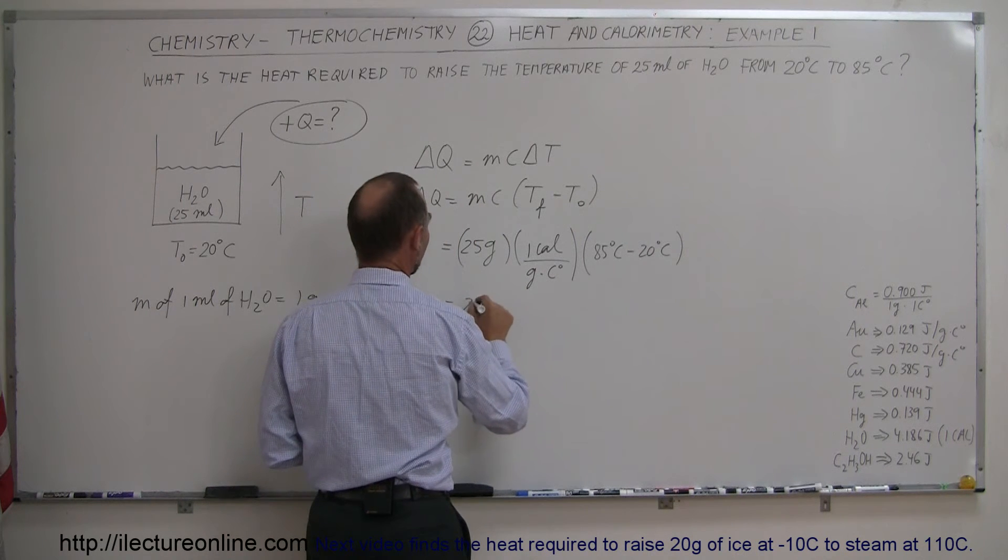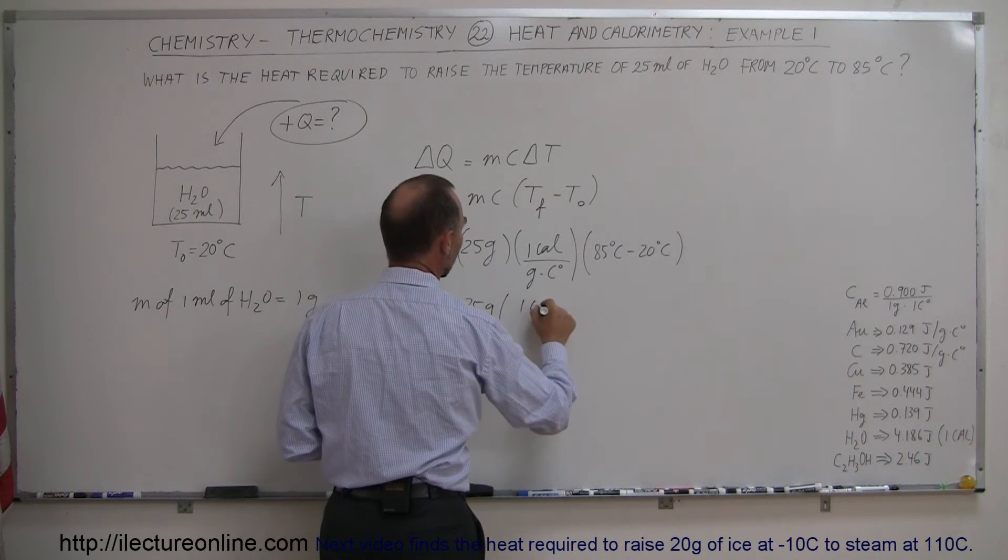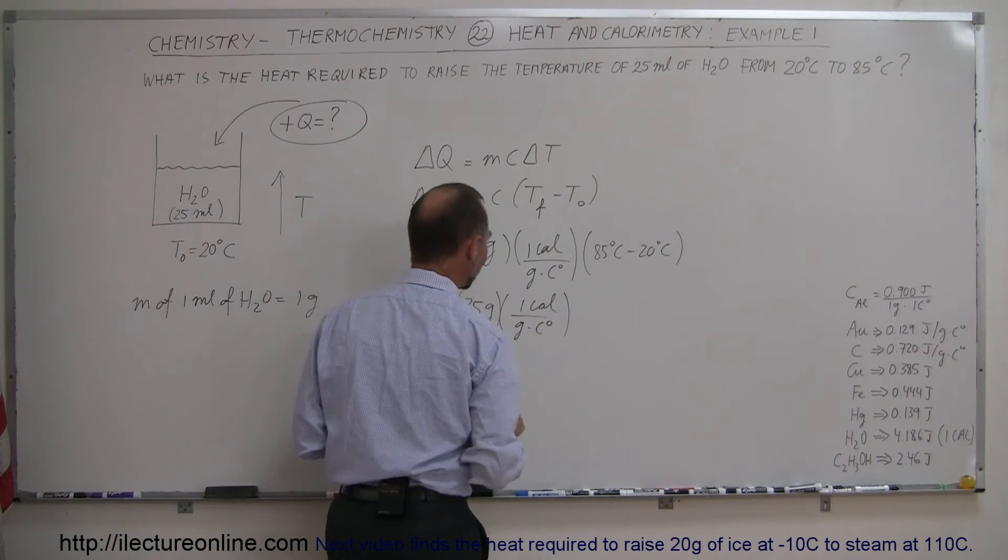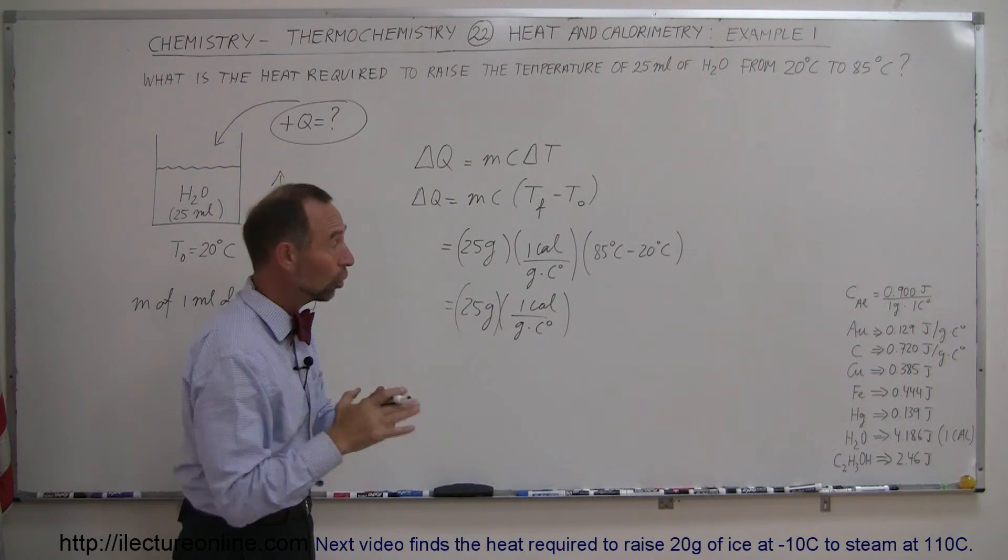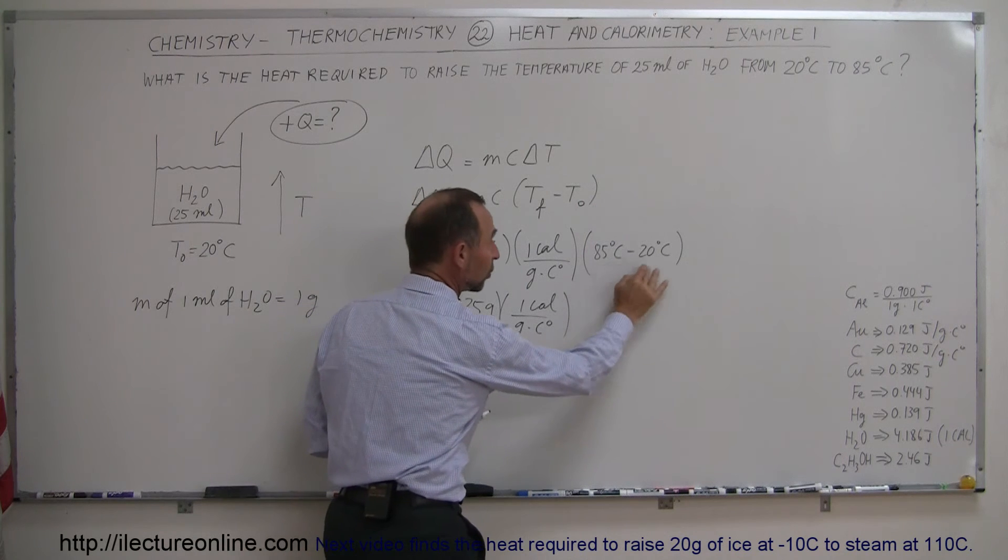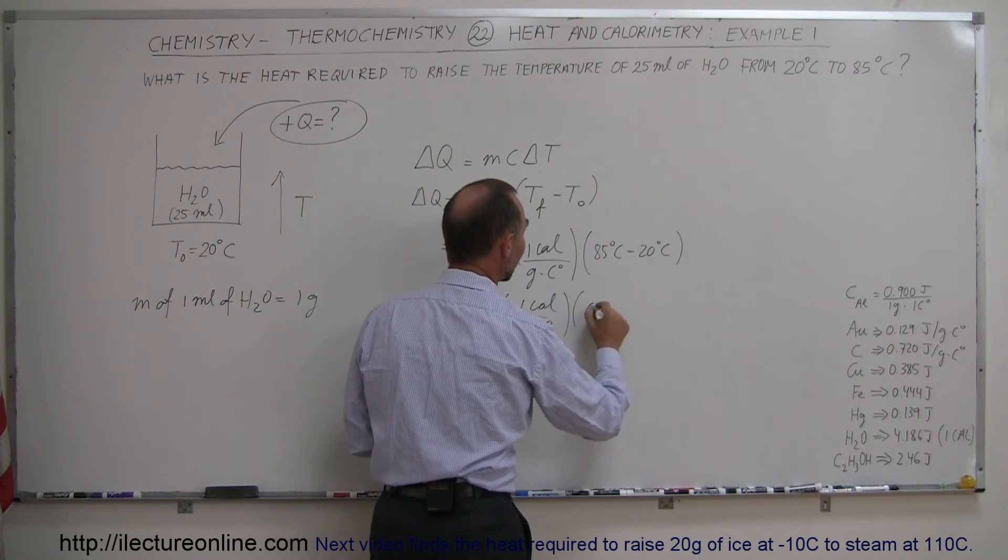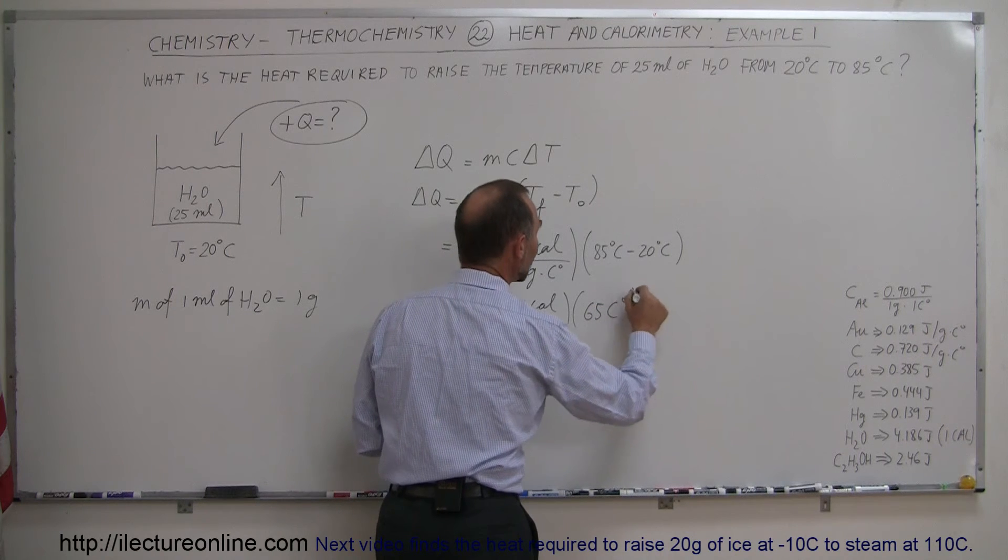So this is equal to 25 grams times 1 calorie per gram per centigrade degree. And you may say, well, why is he writing that again? Well, I wanted to show you that when you do the difference between two temperatures, 85 minus 20 is 65, so this is 65 centigrade degrees.